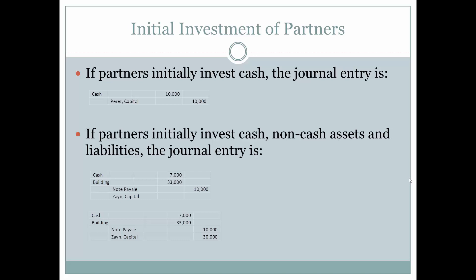If the partners initially invest cash, non-cash assets, and liabilities, then we have to consider the balance that should be recorded in the capital account. In this instance, Zane has invested $7,000 in cash, a $33,000 building, and there's a note payable that has become part of the partnership property. Zane's capital is going to be assets minus the liability. We have $40,000 in assets and $10,000 in liabilities, which means Zane's capital value is $30,000.